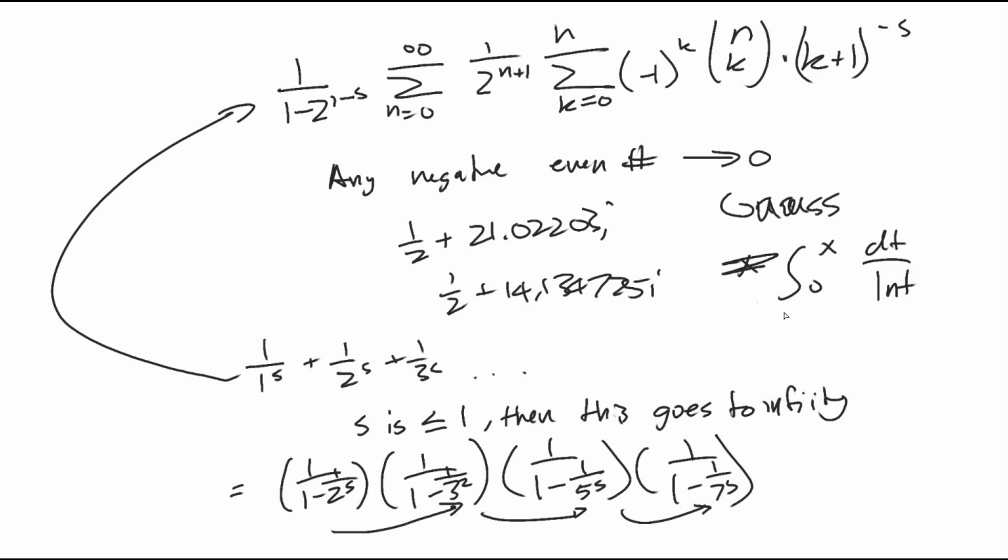And if the Riemann hypothesis is true, this estimate is always going to be within square root of x times natural log of x of the real number of prime values. Yeah, so that's the Riemann hypothesis. Good luck on solving it.